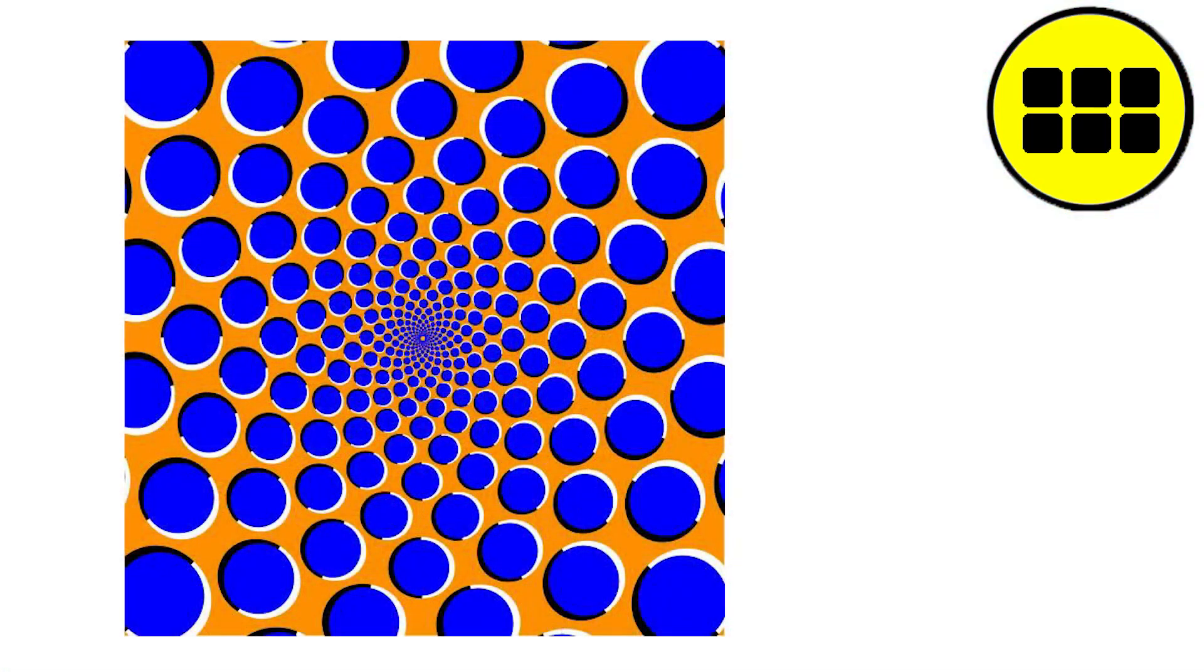This illusion consists in the fact that when you look at a grid of black squares on a white background, it seems that gray spots appear in several places at the intersection of the grid lines. The grid consists of black squares arranged in rows and columns with narrow white spaces between the squares.